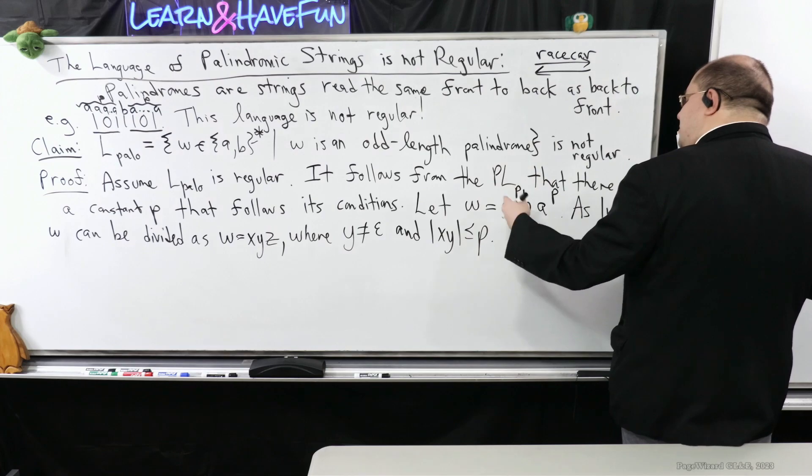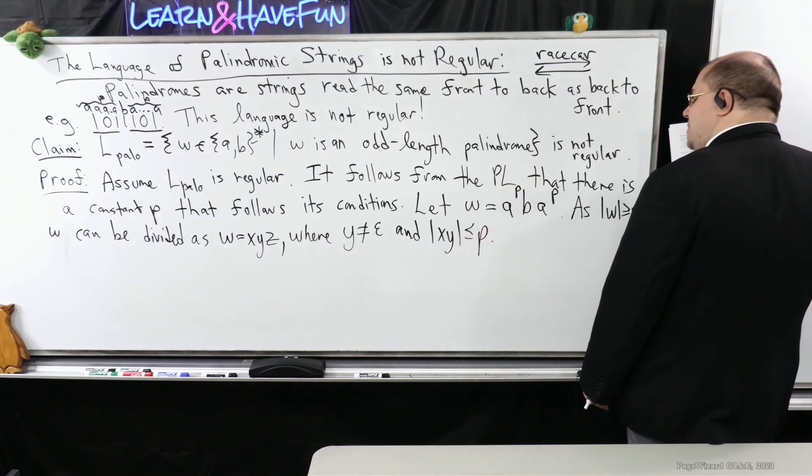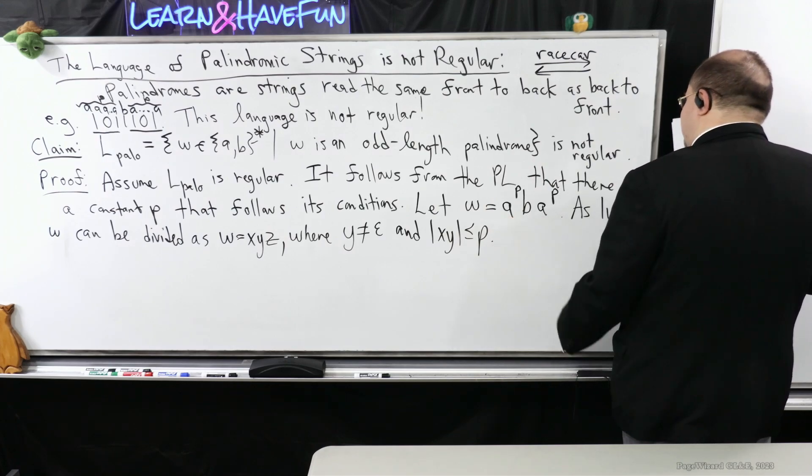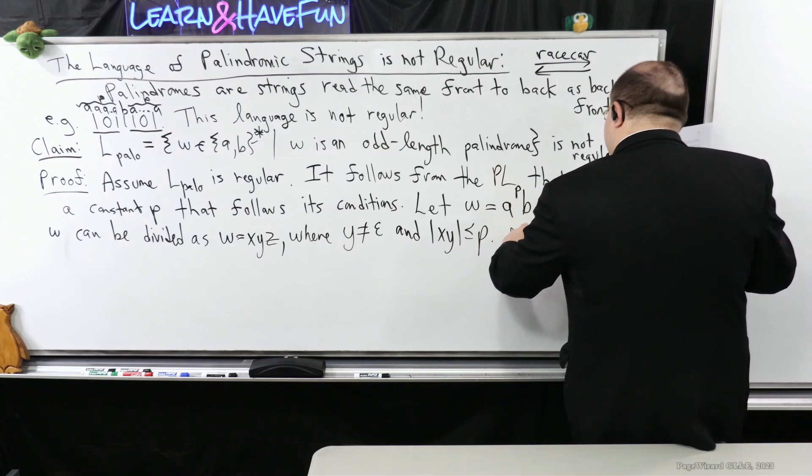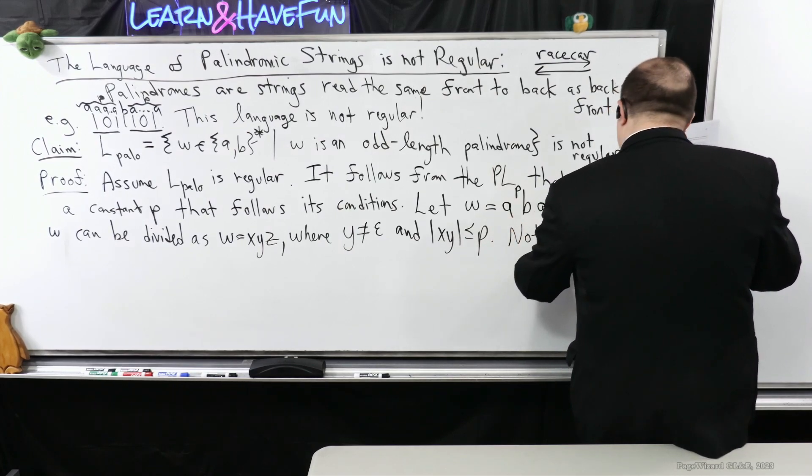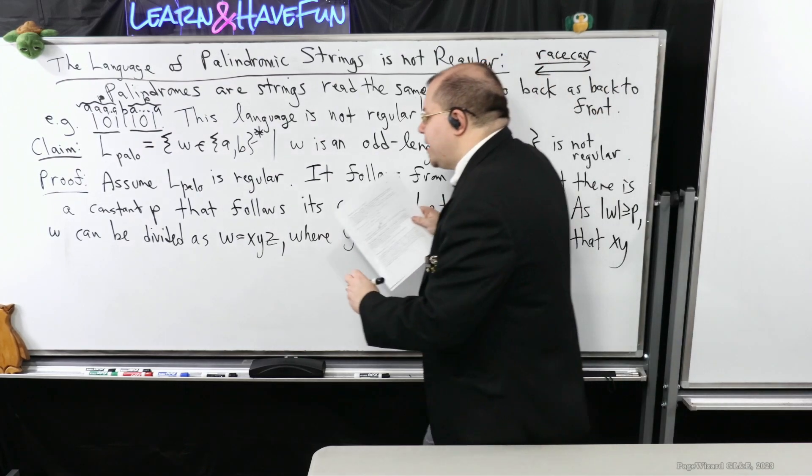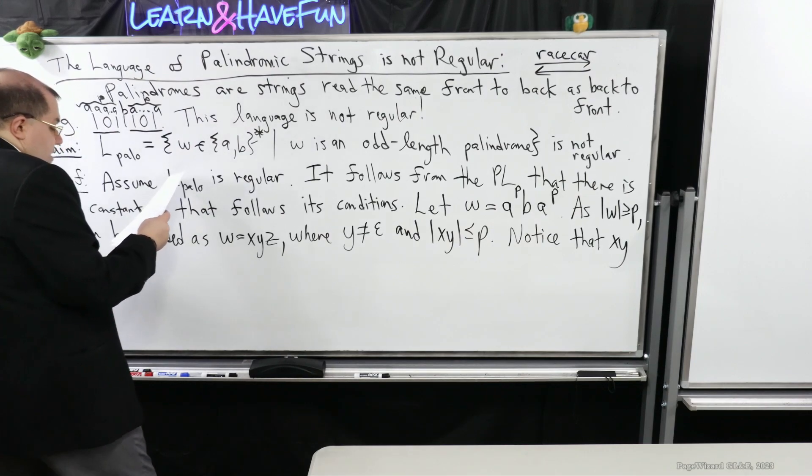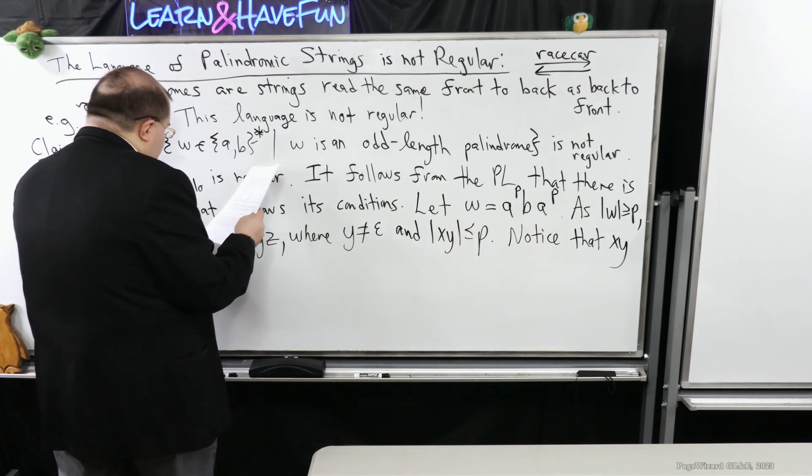So what's Y going to consist of? It's going to occur in the first P symbols, this Y part. It's going to just be A's. So notice that X, Y consists entirely of A's.